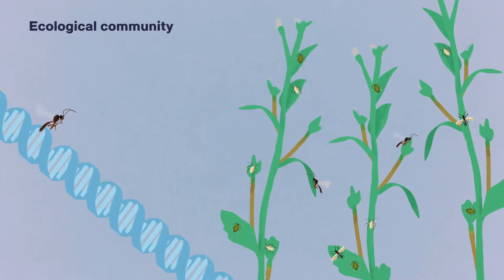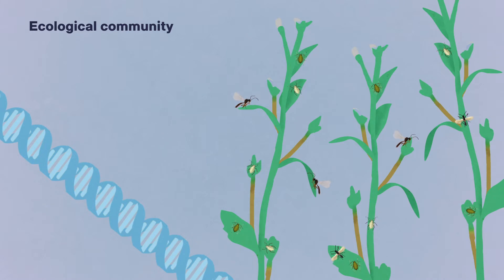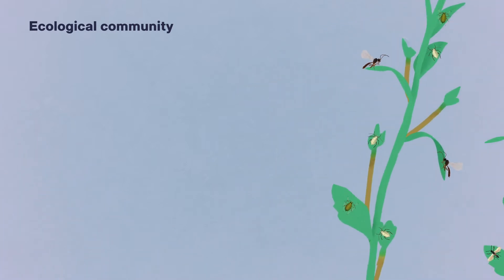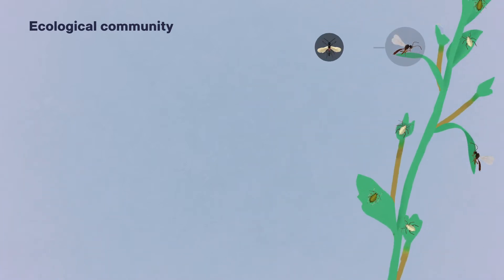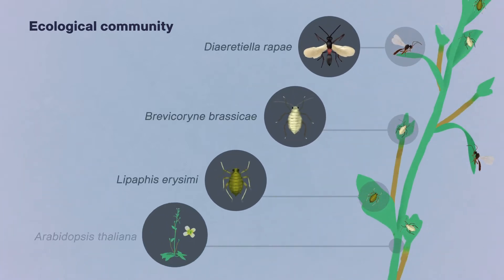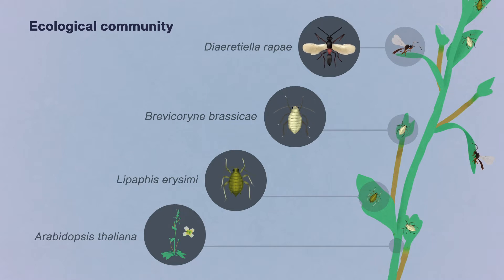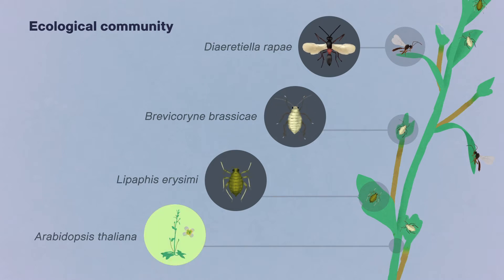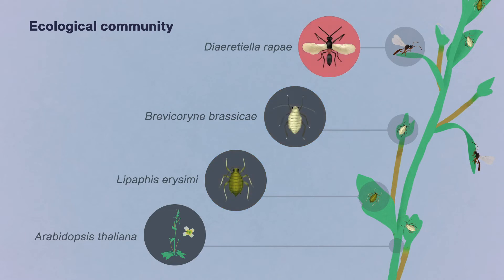Genes and their alleles underlie population persistence, yet their impact on ecological communities remains unclear. To study the genetic basis of the persistence of ecological communities, we created a food web consisting of a plant and two species of aphids and a parasitoid wasp.